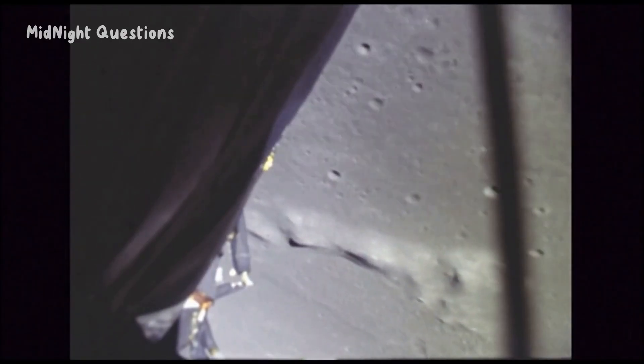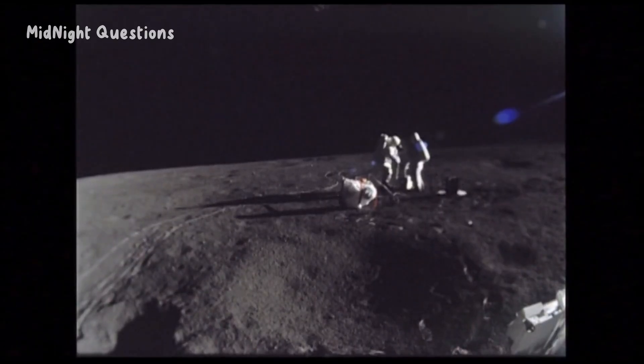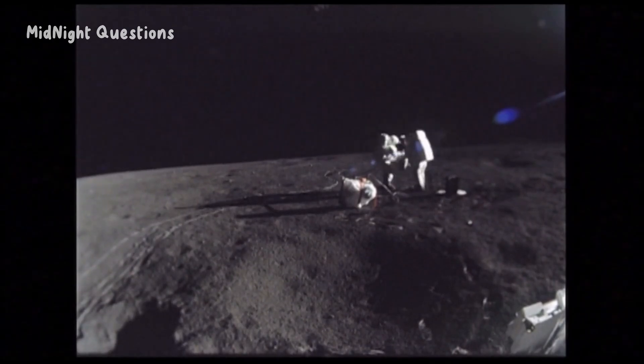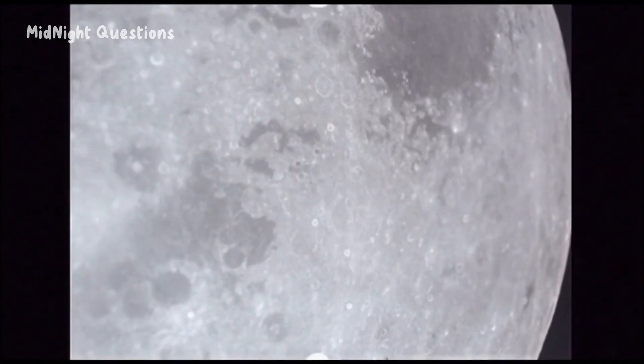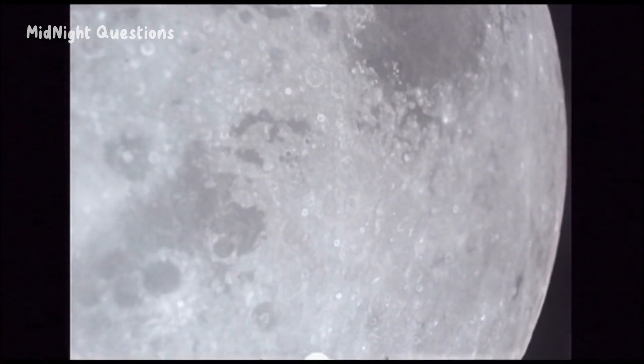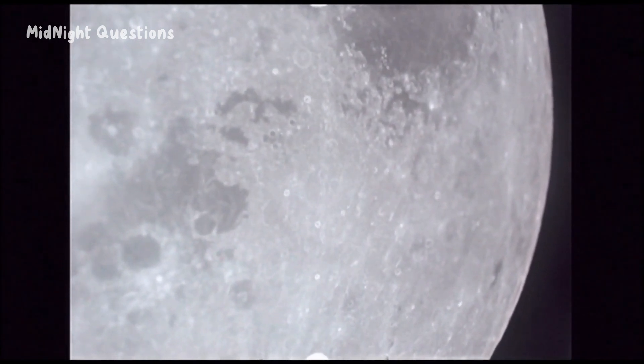There is also a wealth of physical evidence that proves the moon landing was real. For example, moon rocks brought back by the Apollo astronauts have been extensively studied and confirmed to be of extraterrestrial origin. The footprints and equipment left behind on the lunar surface are also visible in high-resolution photographs taken by subsequent missions.